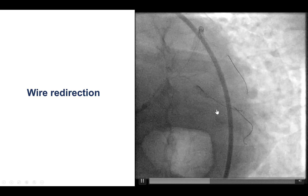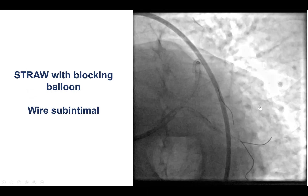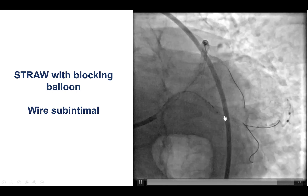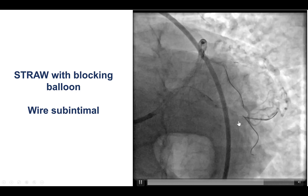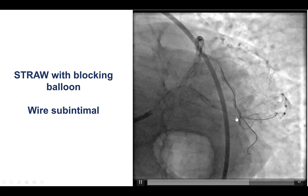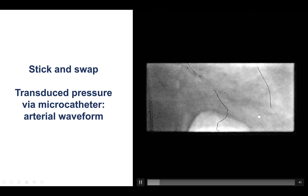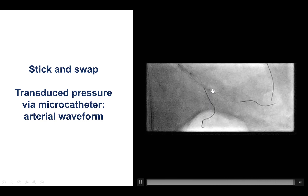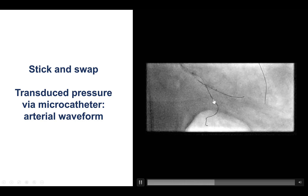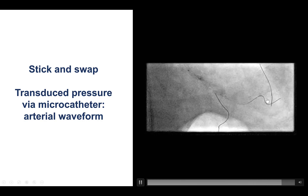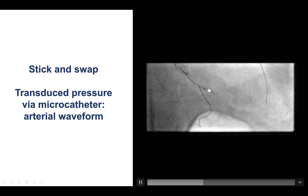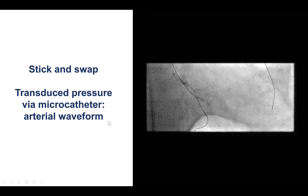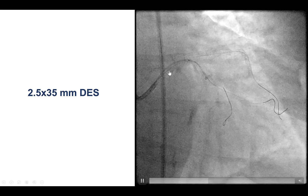Using the side-base technique, we were finally able to advance a Sion Black guidewire along the course of the obtuse marginal. At this point, there was significant hematoma, so we used a balloon to block anterograde flow of blood and then aspirated through a microcatheter. There was some expansion of the vessel, and we can see that the guidewire is in the sub-intimal position. We then did again attempts for re-entry using the Stingray balloon — a new one, as the old one could not be delivered. After using an Astato 20 and Pilot 200, the wire seemed to enter across the course of the vessel. We had difficulty with visualization, so we used the technique of advancing a microcatheter and transducing the pressure, which showed an arterial waveform, suggestive of true lumen position distally.